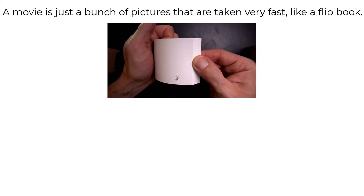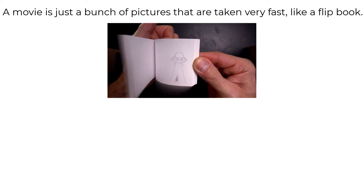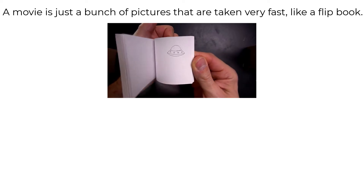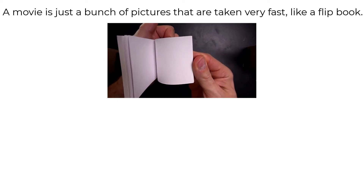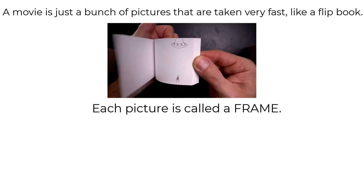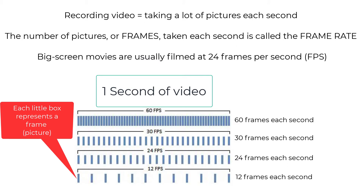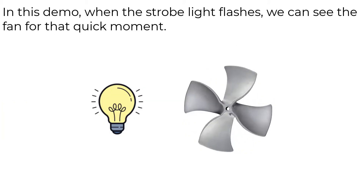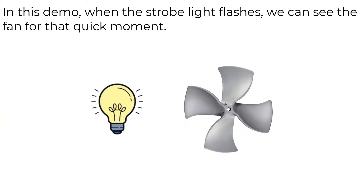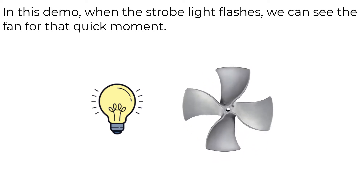A movie is just a bunch of pictures taken very quickly, and watching a movie is like watching a flipbook. Each picture is called a frame, and the frame rate is how many pictures are taken each second. When the strobe light flashes, you can see the fan for that quick moment.